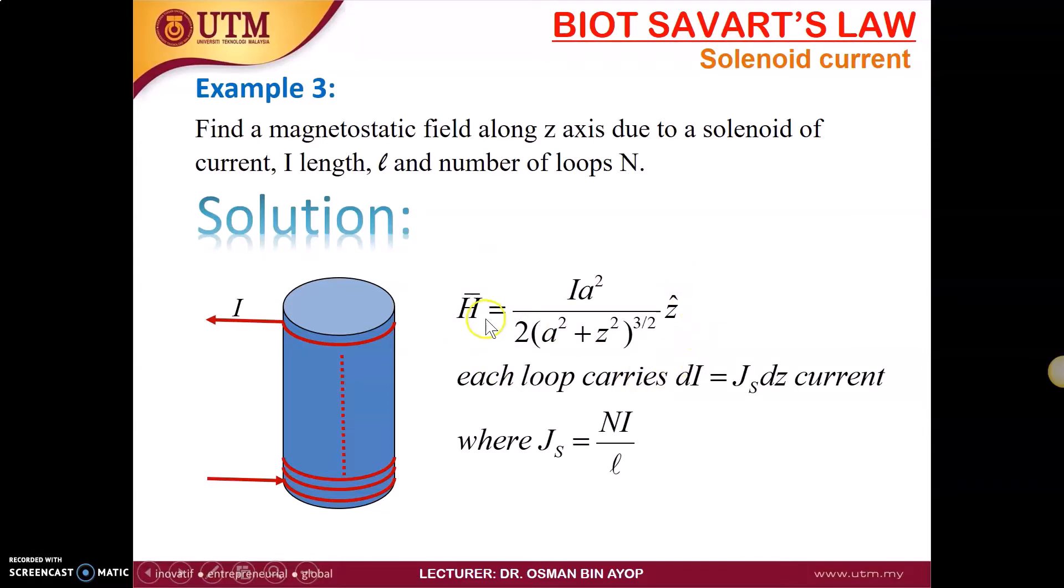This is the field contributed by only one loop, but what happens if we have multiple loops or what we call a solenoid current? We have to do a little bit of modifications. Each loop carries di equal to js dz, so we have a surface current density.